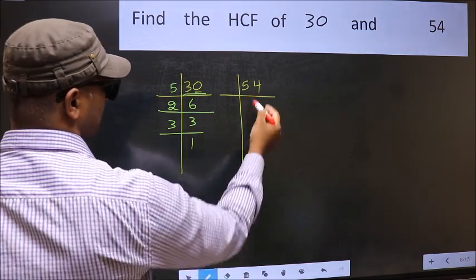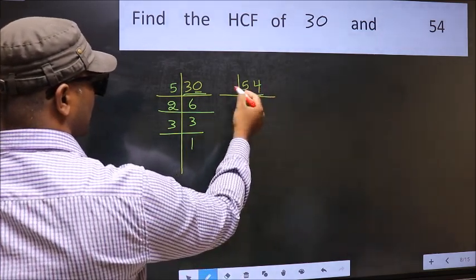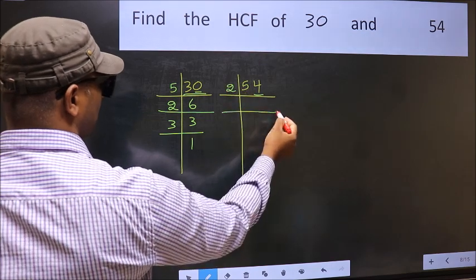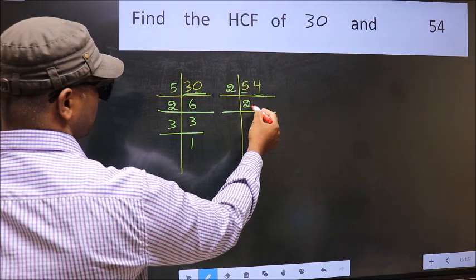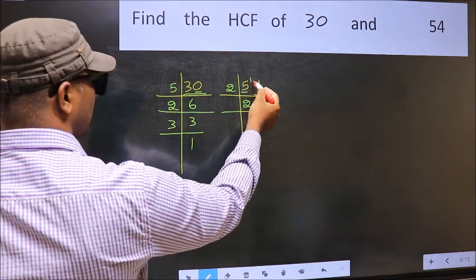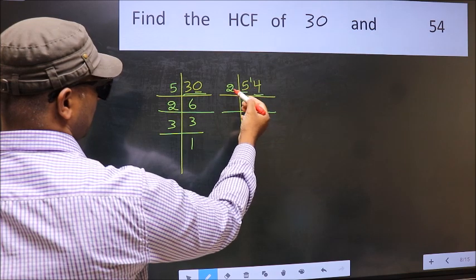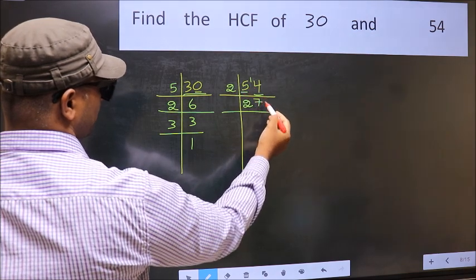Now the other number. Last digit 4, even so take 2. First number 5. A number close to 5 in 2 table is 2, 2 is 4. 5 minus 4, 1, 1 carried forward 14. When do we get 14 in 2 table? 2, 7 is 14.